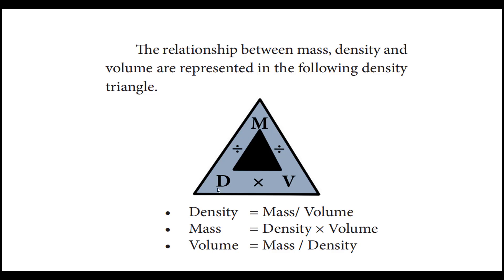If you want mass, you can easily multiply density and volume. If you want density, then mass divided by volume will give you density. If you want volume, then divide mass by density to get volume. With this simple triangle, we can easily identify the interrelationship between mass, density, and volume.